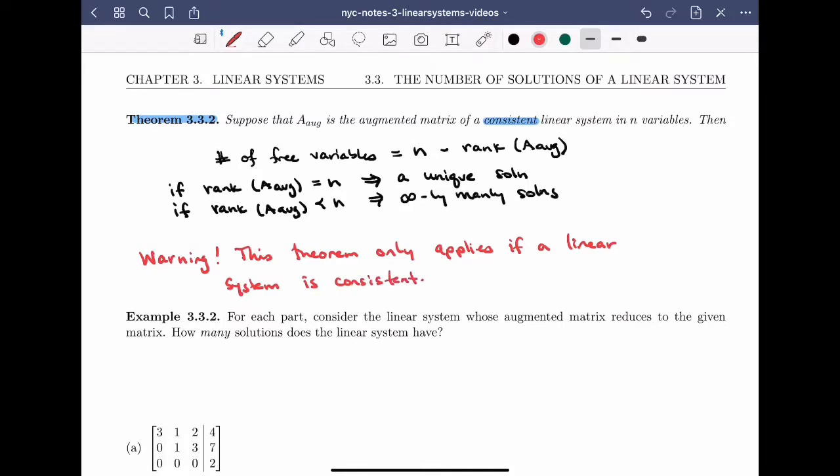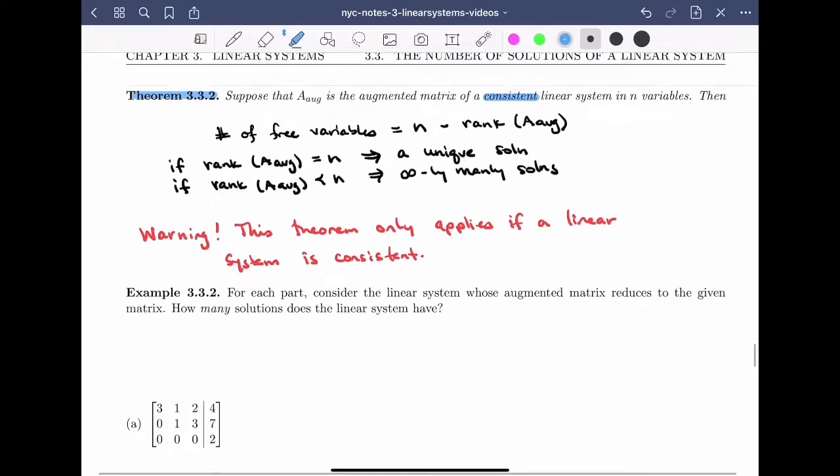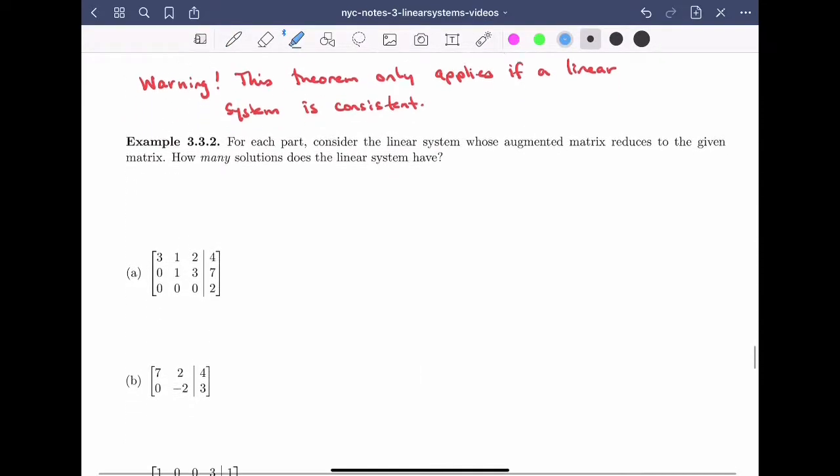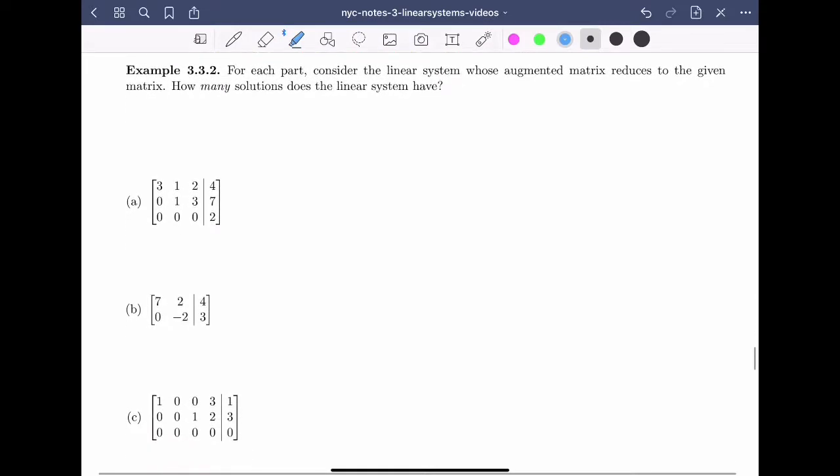You should always check first, is the system consistent? Okay, so let's look at Example 3.3.2. For each part, consider the linear system whose augmented matrix reduces to the given matrix. How many solutions does the linear system have?